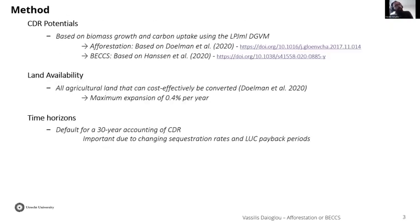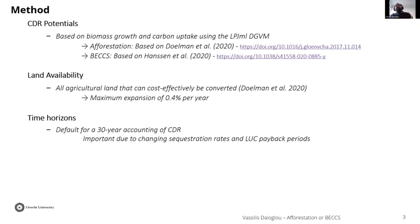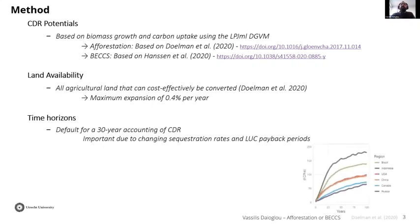We use the LPJmL dynamic global vegetation model to look at afforestation and BECCS, building on existing work: Jonathan Dullman's method for afforestation potentials and Steve Hansen's work on bioenergy with carbon capture and storage. Land availability is based on all agricultural land that can cost-effectively be converted, with a maximum cap based on an expansion rate of 0.4% per year, limiting the maximum amount of agricultural land that can be converted.